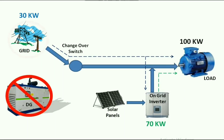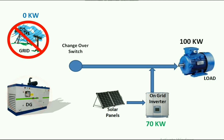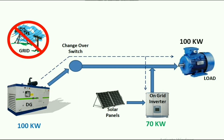So the load gets 70 kW from the solar inverter and 30 kW from the grid. When the grid cuts off, power from the grid stops flowing to the load and inverter, and becomes zero. As it is an on-grid inverter, it stops generating solar power. With no grid, the DG starts and supplies power to the load and inverter. Initially the full 100 kW load is supplied by the DG. After getting supply from the DG, the on-grid inverter starts generating solar power and shares the load — 70 kW by the solar inverter and 30 kW by DG.